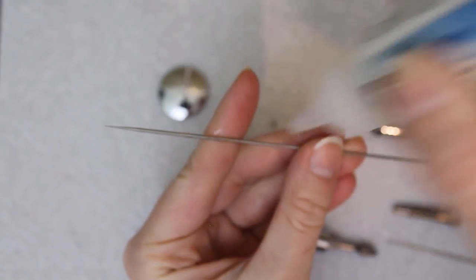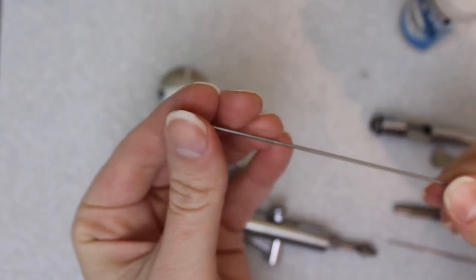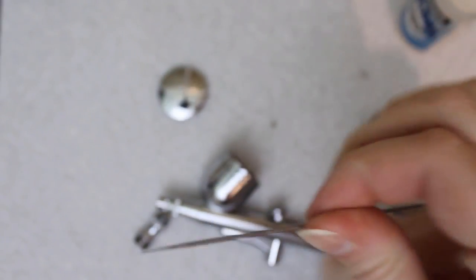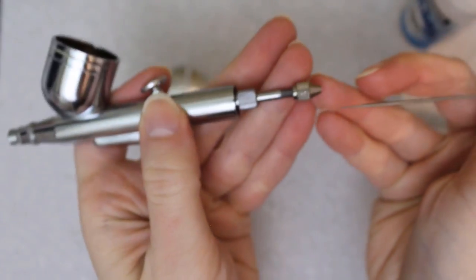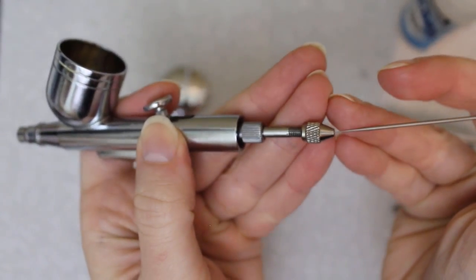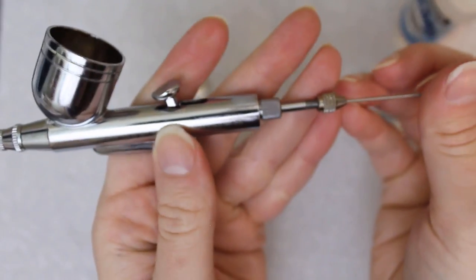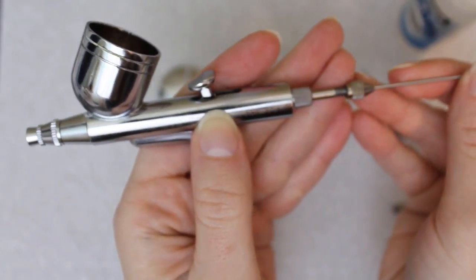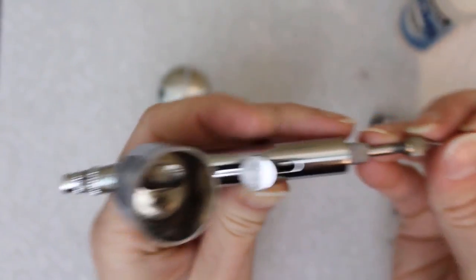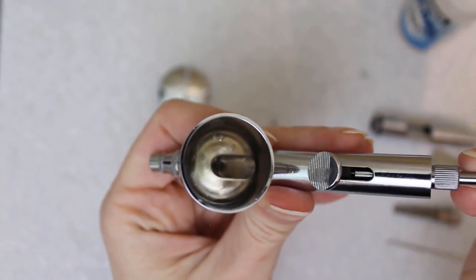Before inserting the needle, it's a good idea to rub a drop of oil over it. Be careful with the point, they're really sharp. The oil helps it slide through the airbrush easily, but it also helps prevent buildup and corrosion of the needle while it's in your brush. Then slide the needle through the chucking nut and chucking guide and into the airbrush. If it sticks, pull it back and try again. Never force your needle in or it could damage it.